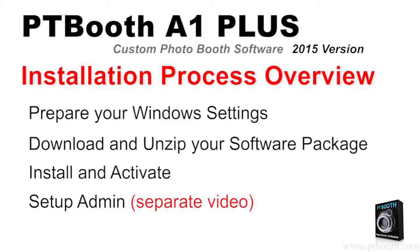To install the PTBooth A1 Plus software you need to do the following. First, prepare your Windows settings. Next, download and unzip your PTBooth A1 Plus package. Then install and activate your PTBooth A1 Plus. And finally, set up the PTBooth admin.